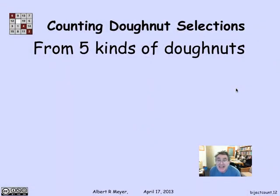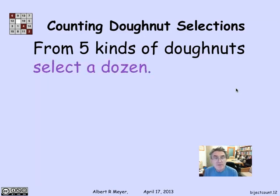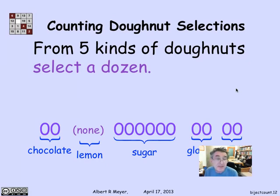One more example of bijection counting that is kind of fun and interesting and will illustrate the fact that we learn something by finding a bijection, even if we don't know how to count either one yet. Suppose I have a situation where there are five kinds of donuts, five different flavors of donuts, and I want to select a dozen. For example, I might choose a selection of a dozen by choosing two chocolate and no lemon, six sugars and two glazed and two plain. So there are 12 donuts here using four out of the five possible flavors.